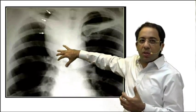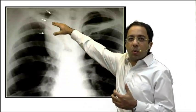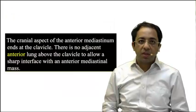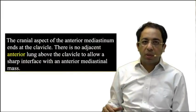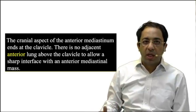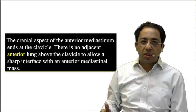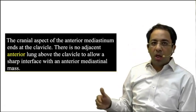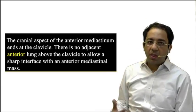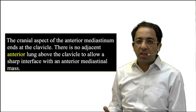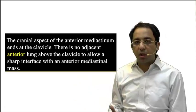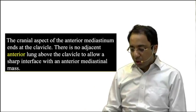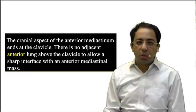If a lesion is extending above the clavicle, it has to be a posterior mediastinum lesion. The differential diagnosis for posterior mediastinum lesions includes neurogenic tumors and paravertebral abscess. You can see how sharply the border is defined above the clavicle. This is the cervicothoracic sign — the basis is that the cranial aspect of the anterior mediastinum ends at the clavicle, so there is no adjacent anterior lung above the clavicle to allow a sharp interface with an anterior mediastinal mass.